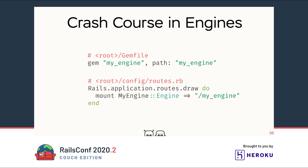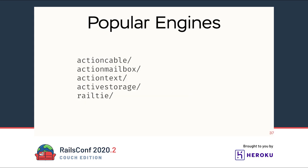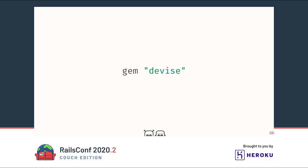Engines also have their own test suites, so you can and should test them in isolation. An engine also comes with an Engine class in the namespace, which acts as glue between the Rails application and the engine's functionality. You can add initializers, configuration, and other stuff there, just like in a Rails application. Finally, you can add routes to the engine and use them in your main application by mounting them in the core app's routes.rb. Have you ever seen engines in the wild? Of course you have. Devise is the most popular example. If you've ever used Devise or extended its controllers, used its paths and routes — you've used engines.